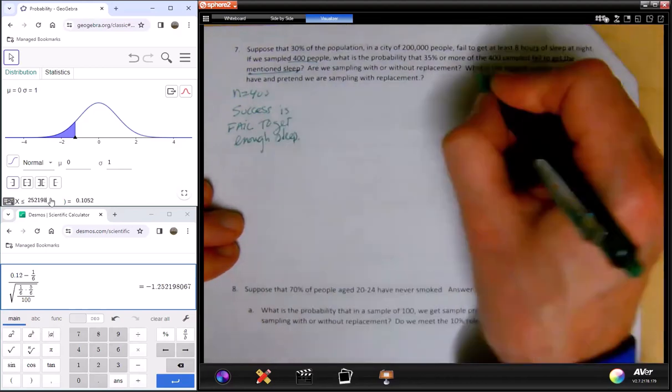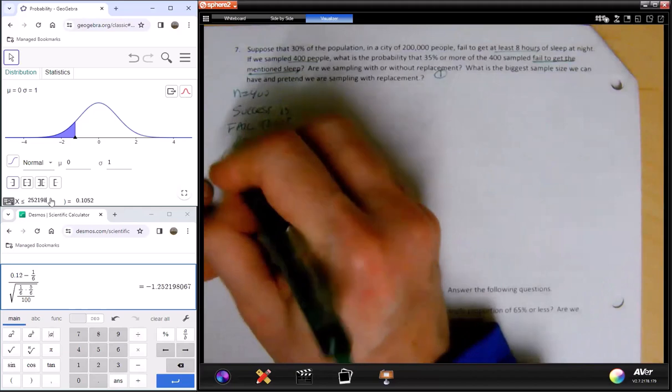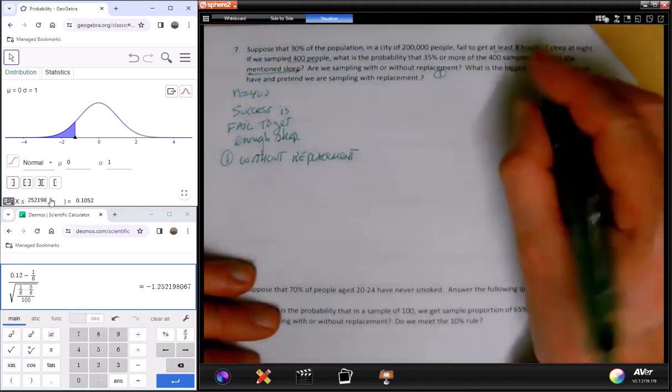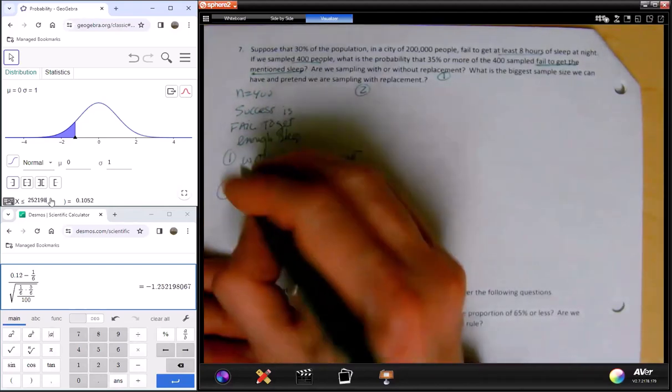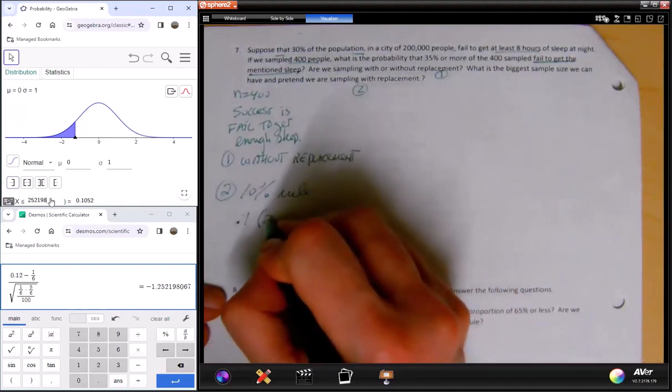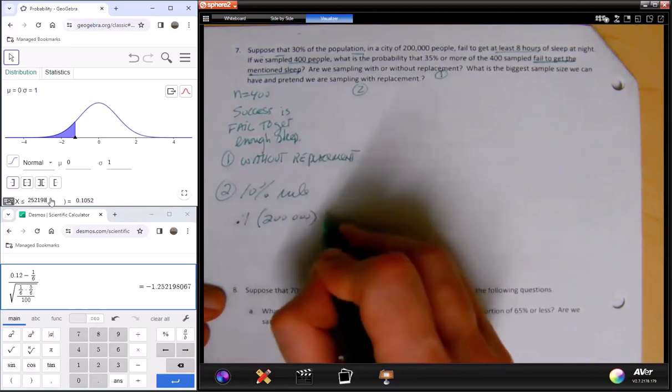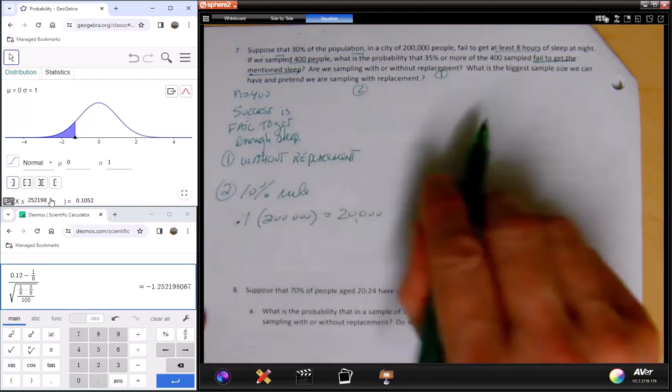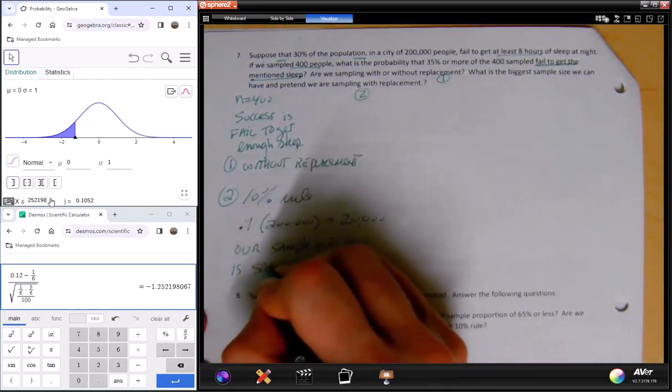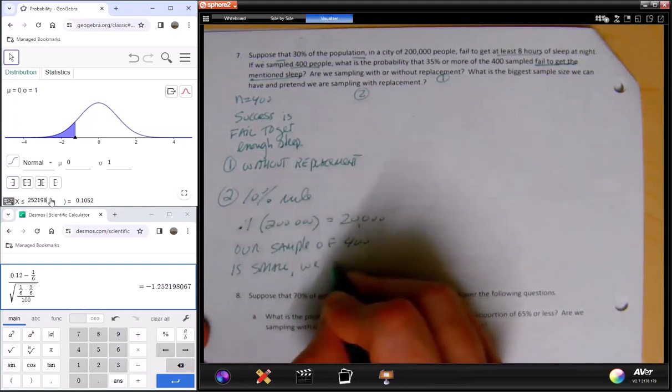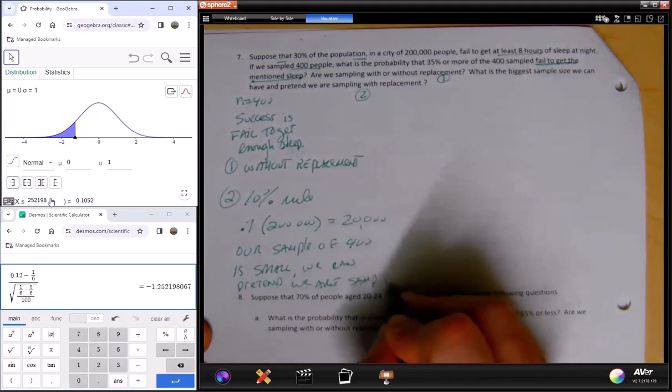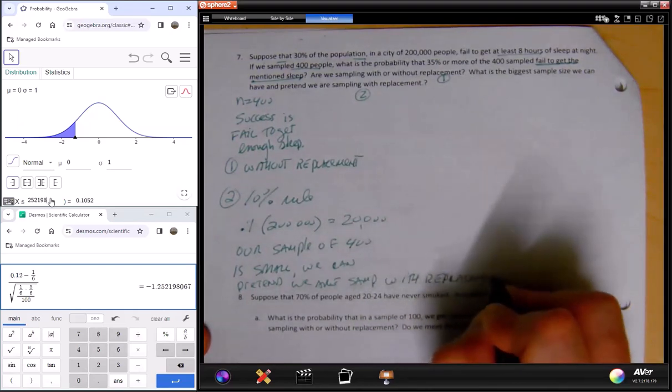Are we sampling with or without replacement? So I'm going to call this question 1 - without replacement. So what is the biggest sample that we can have and pretend we're sampling with replacement? Question 2. So now I'm going to use the 10% rule. So what is the biggest sample we can have? I need to figure out what is 10% of 200,000. So all I do is move the decimal over, and that turns out to be 20,000. So in this case, yes, our sample is small. We can pretend we're sampling with replacement. So we're fine.